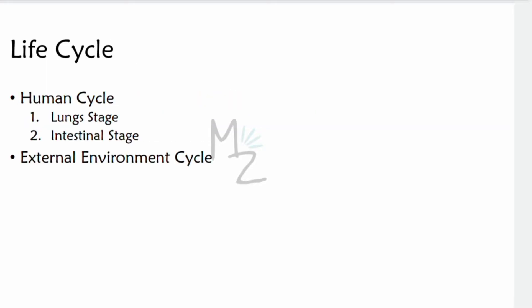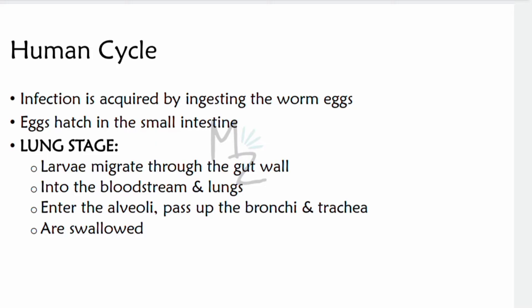Life cycle. It has two stages: the human cycle and the external environment cycle. The human cycle is classified as the lung stage and the intestinal stage. Humans are infected by ingesting embryonated eggs in food or water contaminated with feces. The eggs move to the small intestine where they hatch and release larvae — this is the first intestinal stage. Then the larvae migrate through the gut wall, enter the bloodstream, and migrate to the lungs — this is the lung stage. In the lungs, larvae enter the alveoli, pass up the bronchi and trachea, and are coughed up and swallowed back down to the intestine.